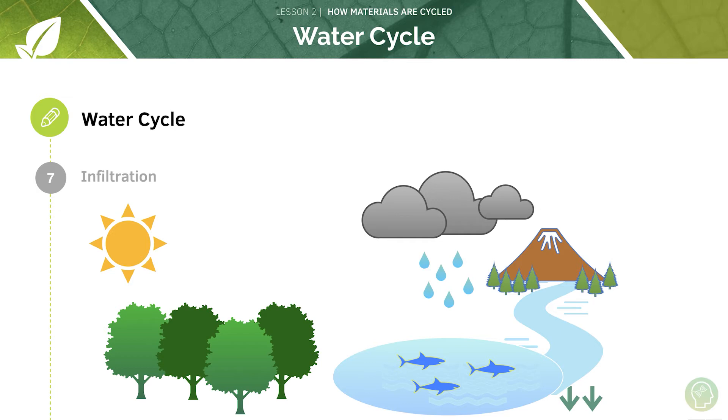Some water that falls is absorbed into the ground and this can then be stored in aquifers, these underground permeable rocks. We call that infiltration. So this process then cycles.